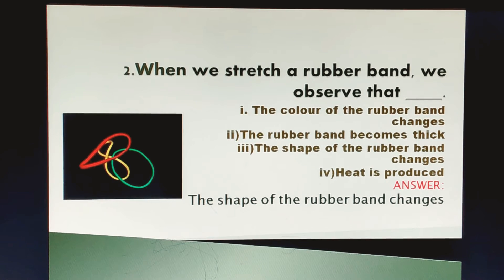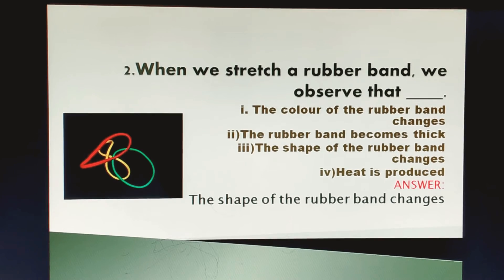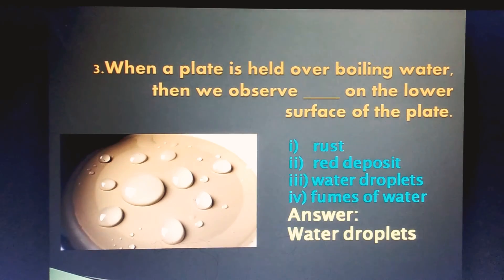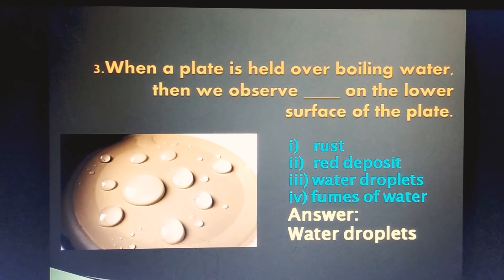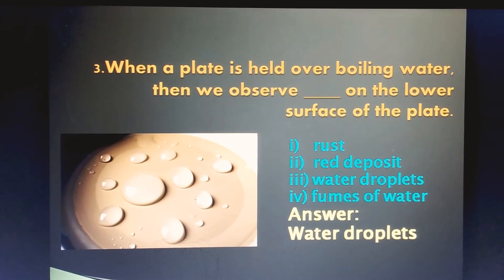When we stretch a rubber band, we observe that: the color of the rubber band changes, the rubber band becomes thick, the shape of the rubber band changes, heat is produced. The correct answer is the shape of the rubber band changes.